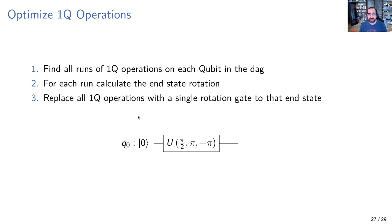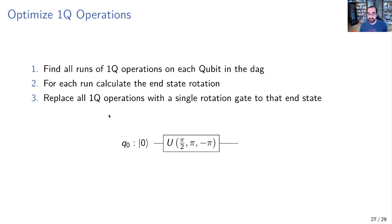In Qiskit we used to use the quaternion approach but moved to the more general linear algebra approach as IBM changed their basis gate, since as IBM employees we get incentivized to make things perform as best as we can on IBM devices.